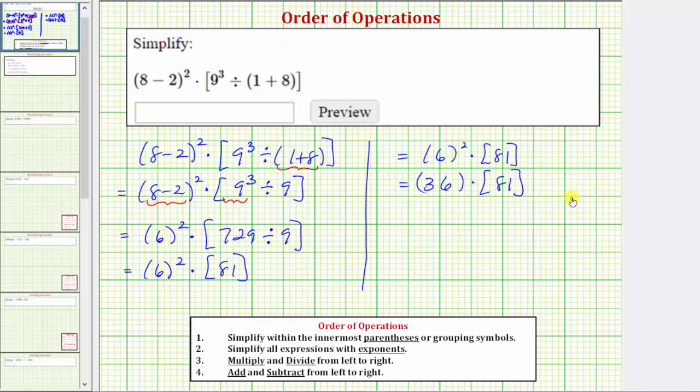Let's show this product on the side. We have thirty-six times eighty-one. So one times six is six. One times three is three. Now we multiply by eight. Because eight is in the tens place value, we'll put a zero in the ones place value and now multiply by eight. So eight times six is forty-eight.